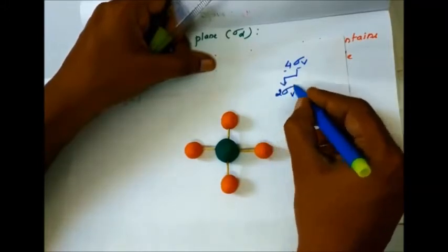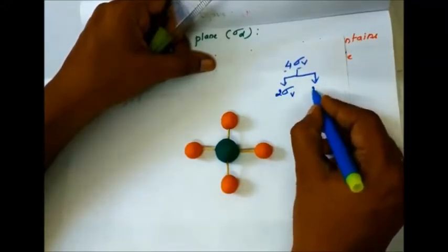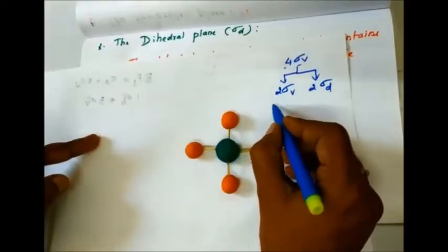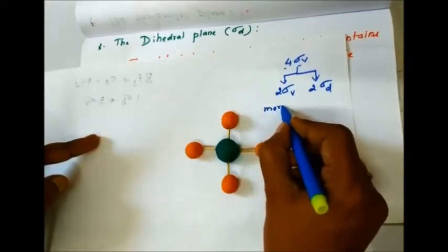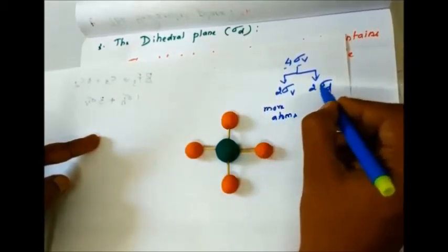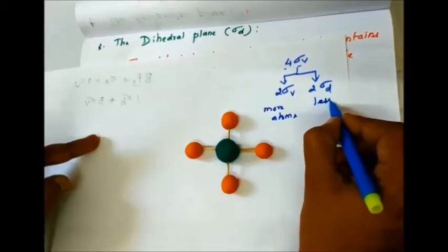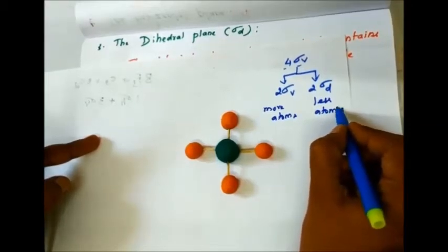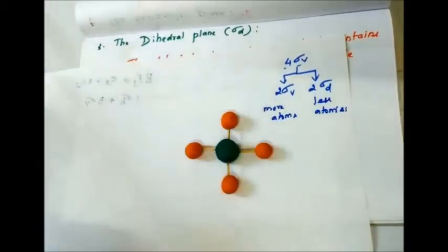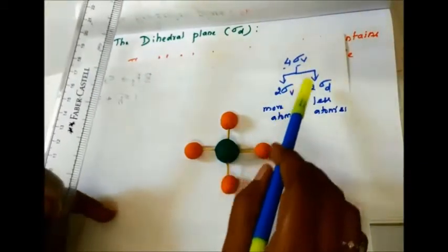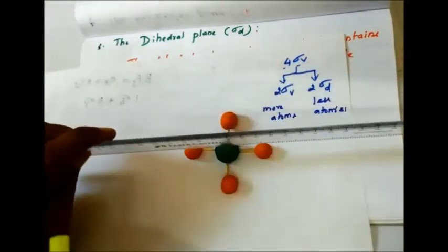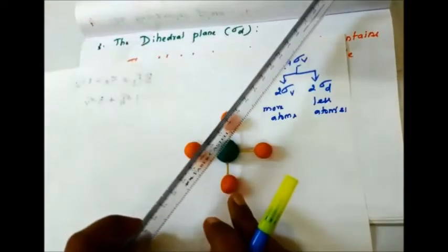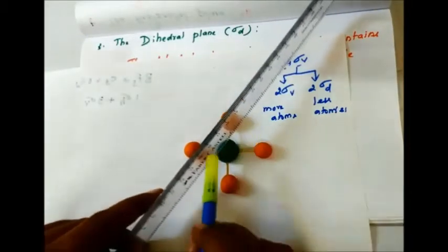So, sigma v passes through more atoms, and sigma d passes through less atoms. For PtCl4: 4 sigma v total — 2 sigma v pass through more atoms (3 atoms including platinum), and 2 sigma v pass through less atoms, which we call sigma d.